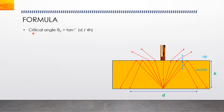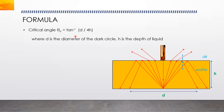Formula: The critical angle θc is given as θc = tan⁻¹(d / 4h), where d is the diameter of the dark circle and h is the depth of the liquid. The refractive index μ is then calculated as μ = 1 / sin θc.